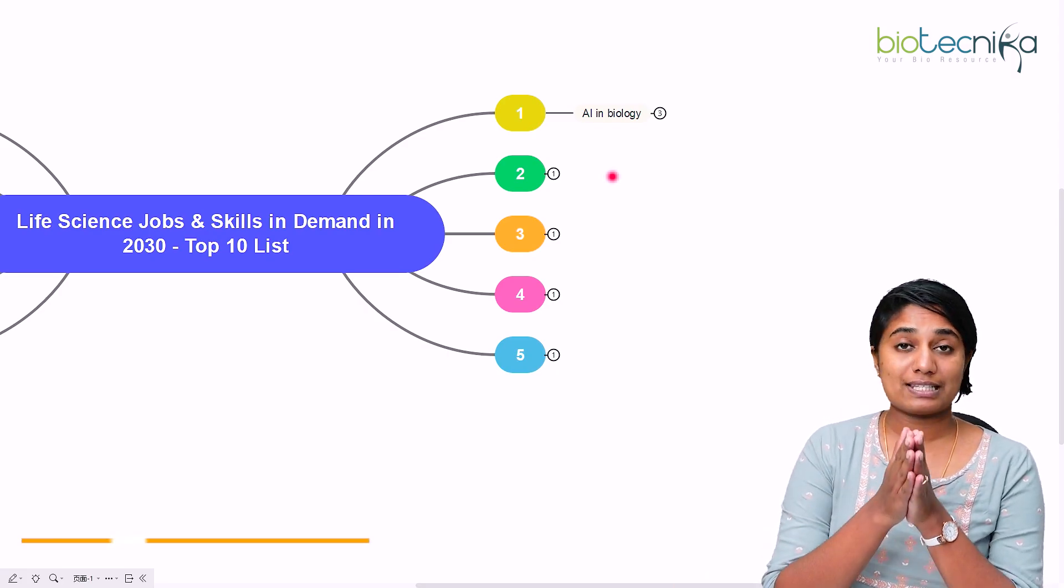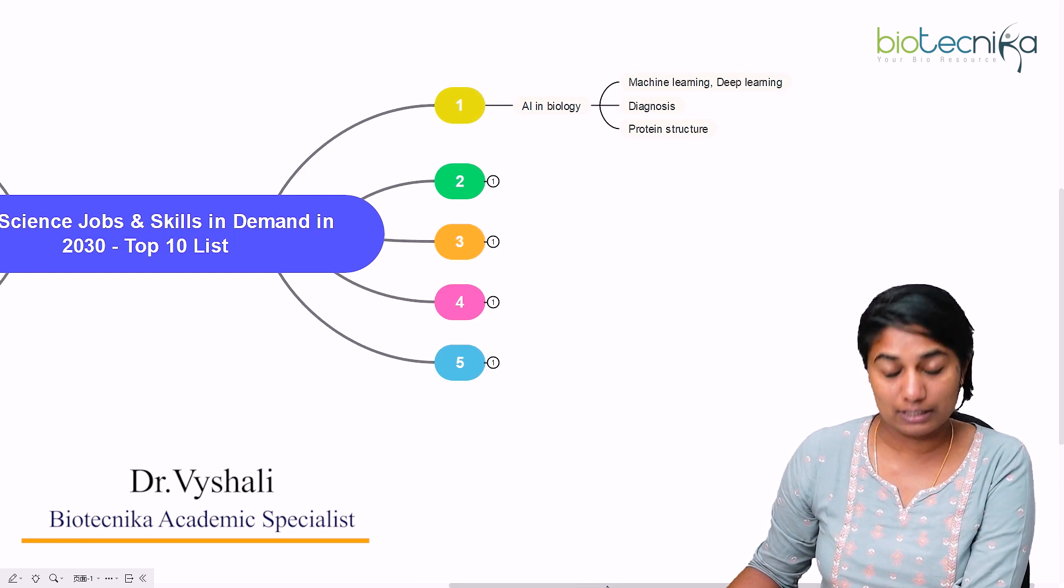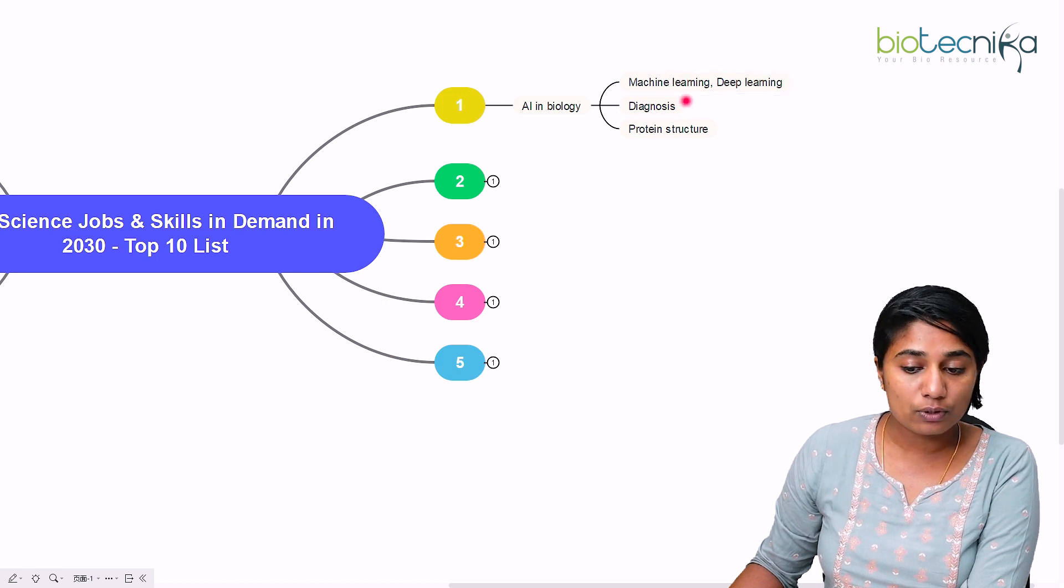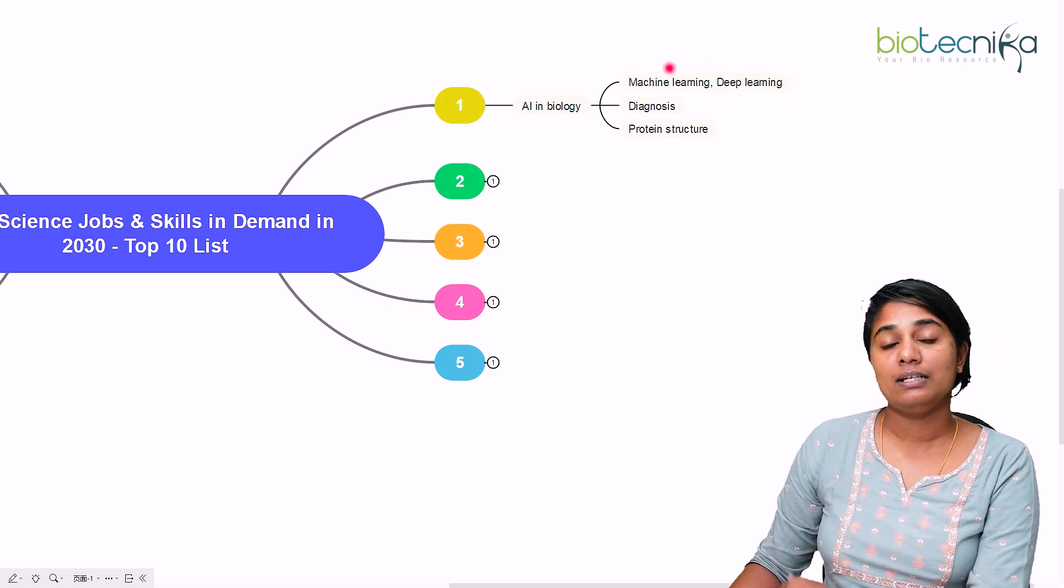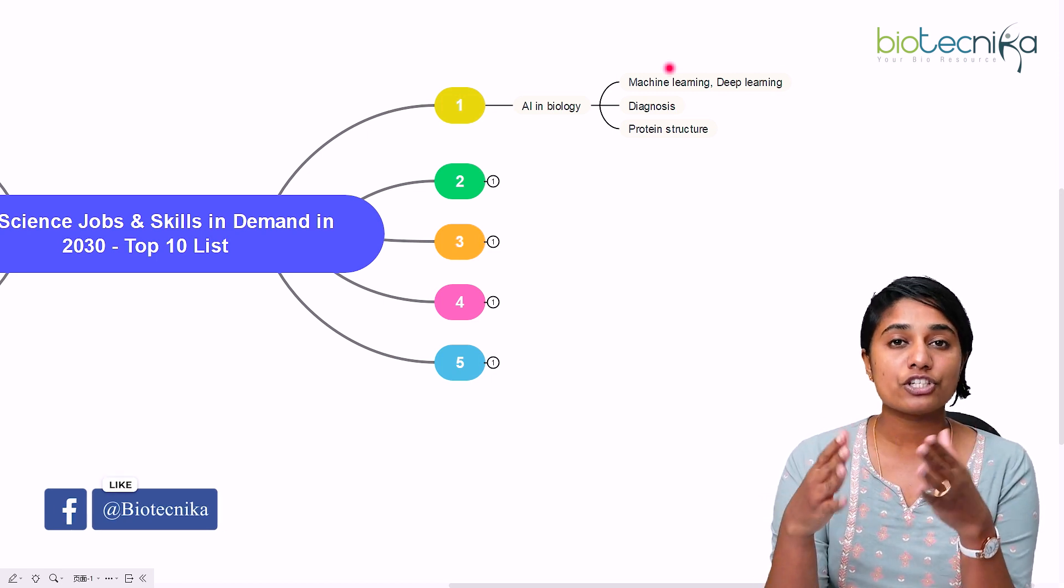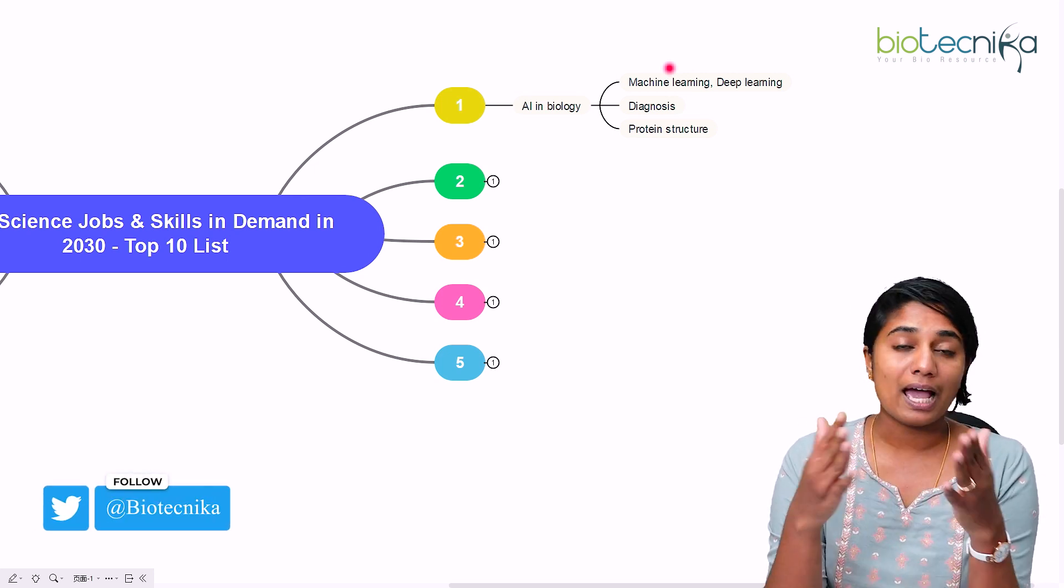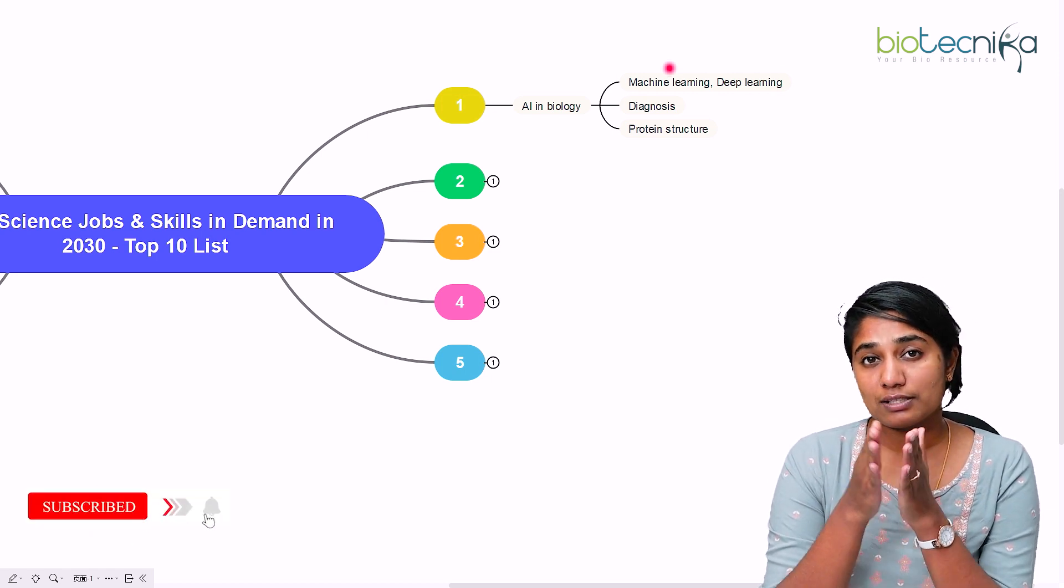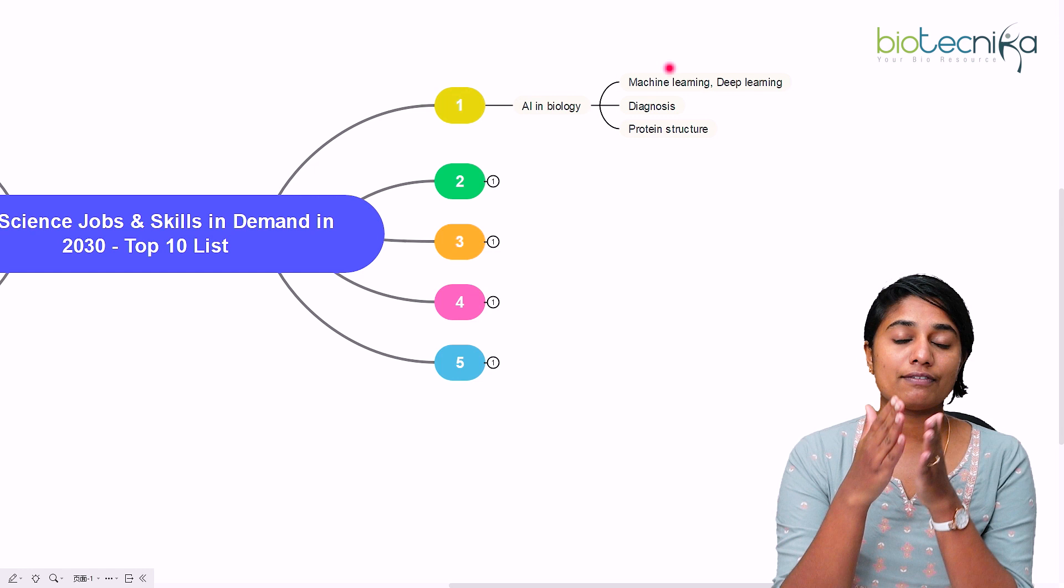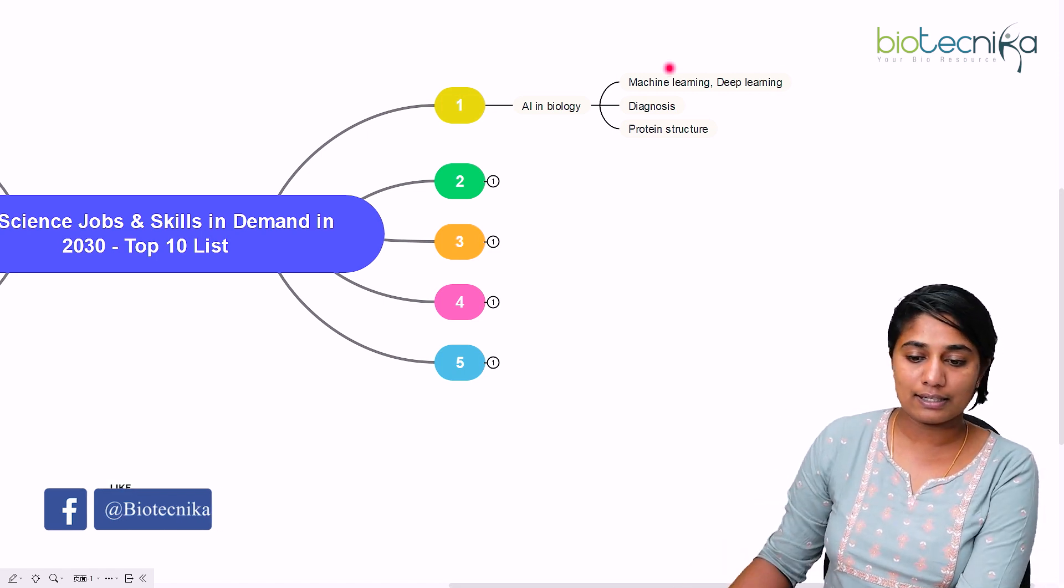The first job or skill that I have for all of you is AI in biology, that is artificial intelligence in biology. Artificial intelligence is the use of computers in biology. It mainly involves machine learning and deep learning. Machine learning means you give certain data to the machine and the machine learns a relationship between the two independent variables given in the data. When you give just one set of data, it will predict the next set of data. That is machine learning.